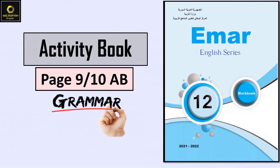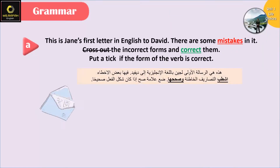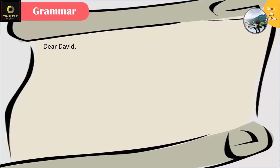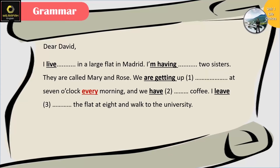Now let's move on to the activity book, page 9 and 10. The first question: This is Jane's first letter in English to David. There are some mistakes in it. Cross out the incorrect forms and correct them. Put a tick if the form of the verb is correct. Dear David, I live in a large flat in Madrid - no mistake here.